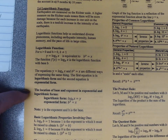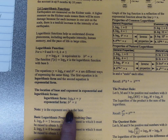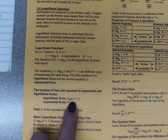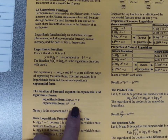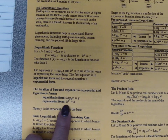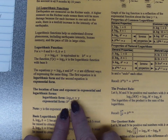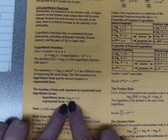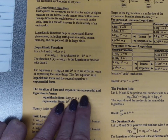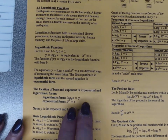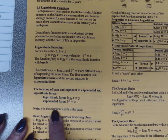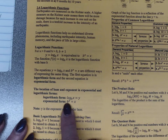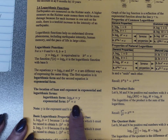Looking at the location of base and exponent: in logarithmic form we have log base b of x, and in exponential form we have b to the y equals x. Notice the b stays in the same place — it comes first. The x and y appear to swap places visually, though mathematically something else is happening. y is the exponent and b is the base, so b to the exponent equals x.